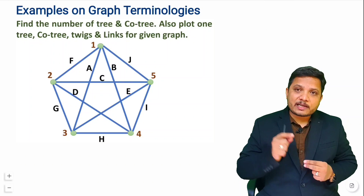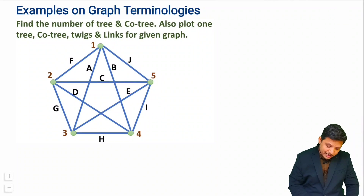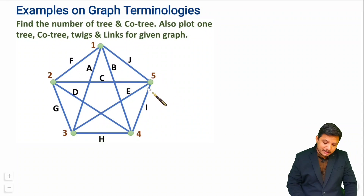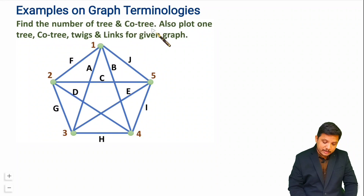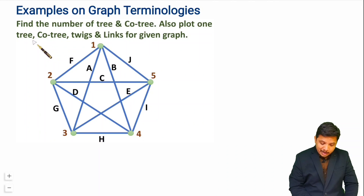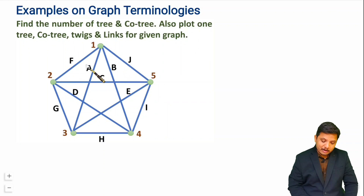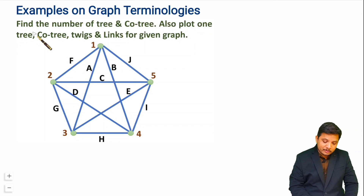Let us have the first example. We are given one interesting graph and for this graph we need to find the number of trees and cotrees. We also need to plot one tree and its cotree and show the twigs and links for the given graph.